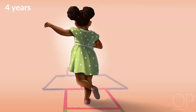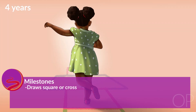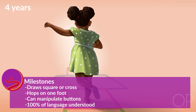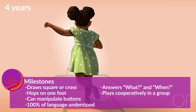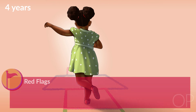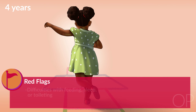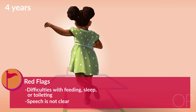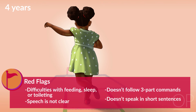Four years: Her drawing skills now include a four-sided square or a cross, and she can hop on one foot. She can manipulate buttons, is fully understood by strangers, and is answering what and when questions. She knows how to follow the rules in a game or in play, such as a simple board game, and knows at least four colors. Red flags at four years old include difficulties with feeding, sleep, or toileting, speech not clear, not following three-part commands, or not speaking in short sentences.